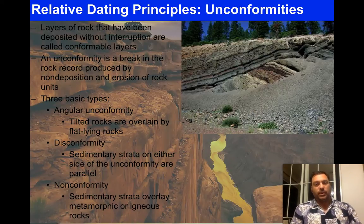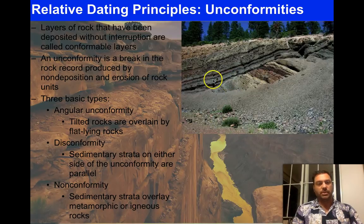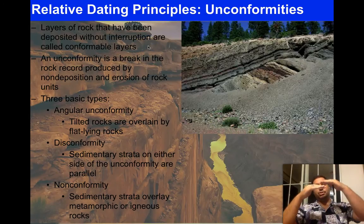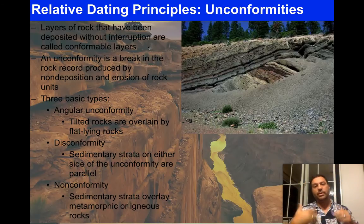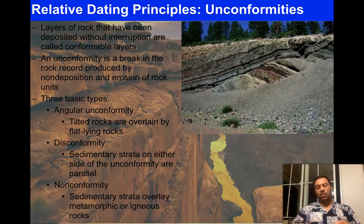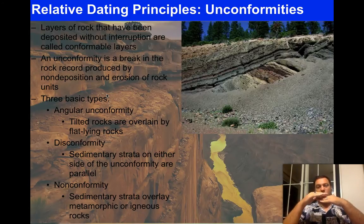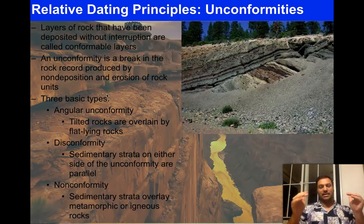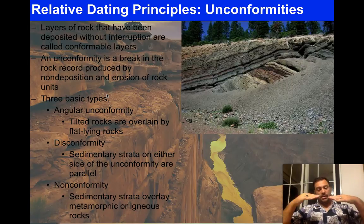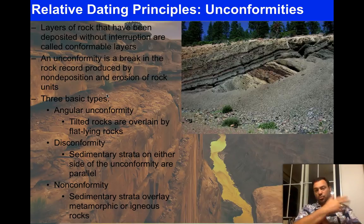Layers of rock deposited without interruption are called conformable layers — a continuous recording of time. An unconformity is a break in the rock record produced by non-deposition or erosion of rock units — a period of lost time where the record is missing. For example, you might have layers being deposited, then a tectonic folding event that gets eroded off, destroying everything on top, and then more deposition on top of that. That's one way you get an unconformity.